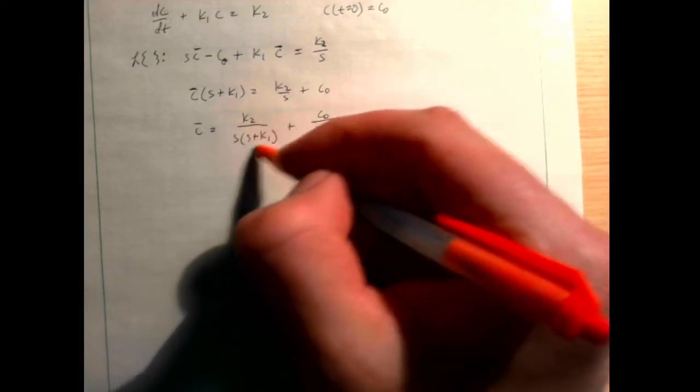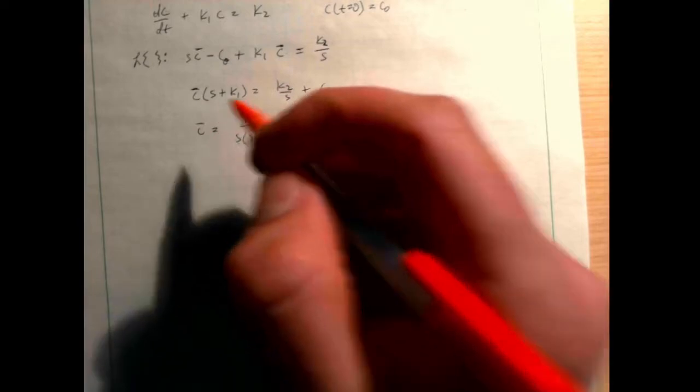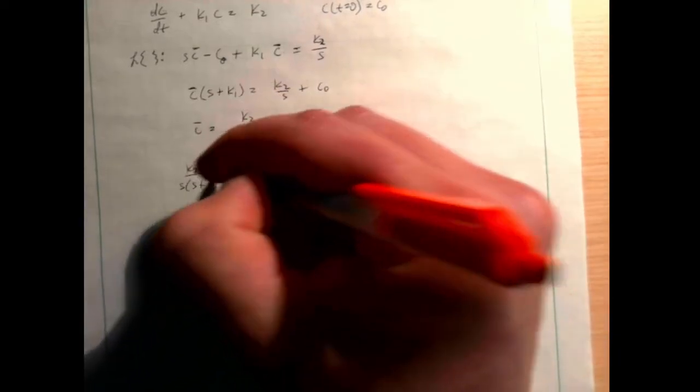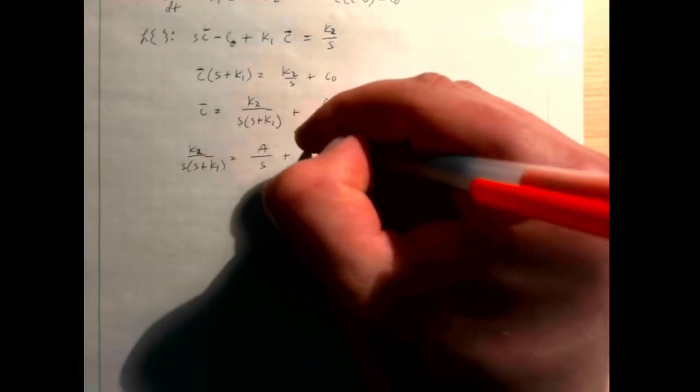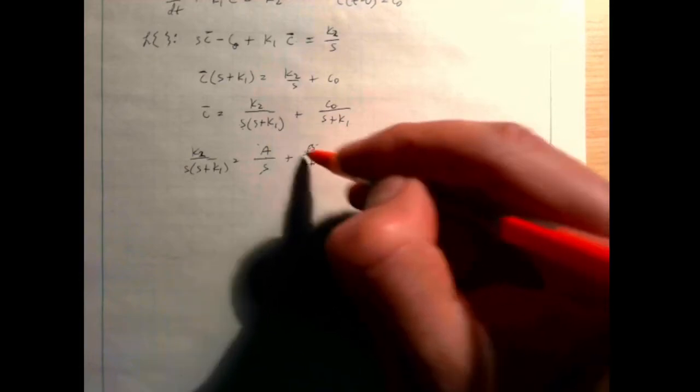Partial fraction decomposition is something you learn in college algebra. Basically, we rewrite K2/[s(s+K1)] as A/s + B/(s+K1), where s(s+K1) is the least common denominator. We need to find what A and B should be in each numerator so that when added together they give K2. We do this by cross-multiplying and adding: A(s+K1) + B·s must equal K2.